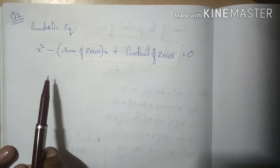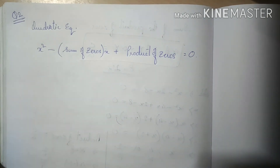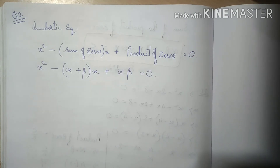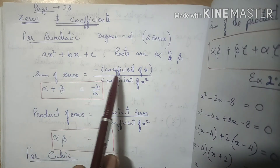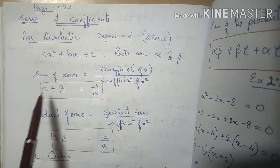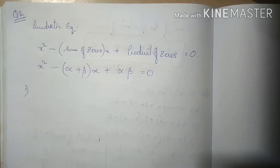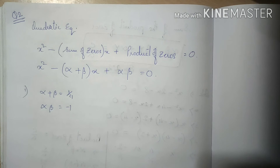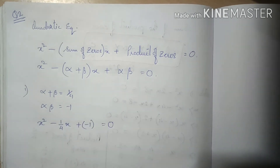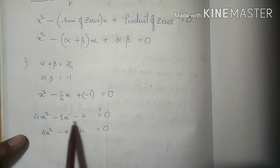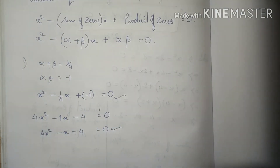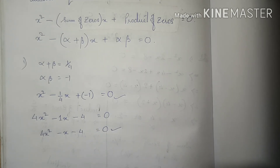Before starting question number 2, here's an important concept: we can write a quadratic equation in the form x squared minus (sum of zeros) times x plus (product of zeros). This can be derived from the standard coefficient relationships. In question 2, the sum of zeros and product of zeros are given, and we simply substitute the values to form the equation.